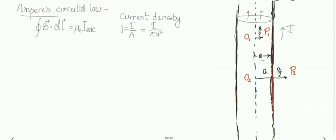We need to find the magnetic field at point P2 (outside) and at point P1 (inside). For point P2, we consider an Amperian loop of radius r2. Since P2 is at a distance a/2 from the surface, the total distance from the axis is a plus a/2, giving r2 = 3a/2. The Amperian loop passes through point P2 at radius 3a/2.